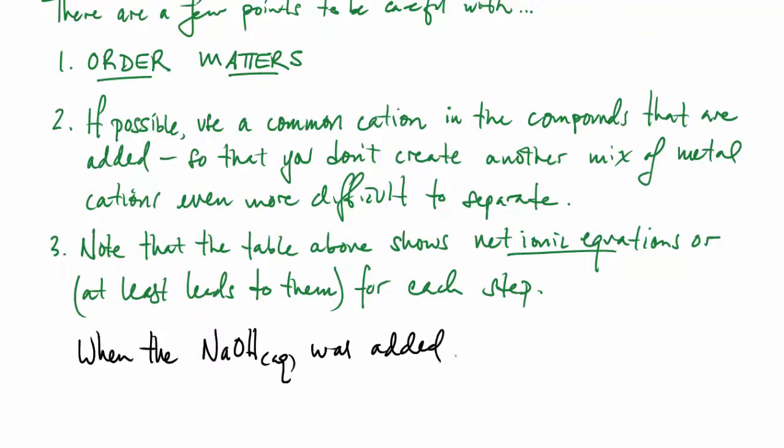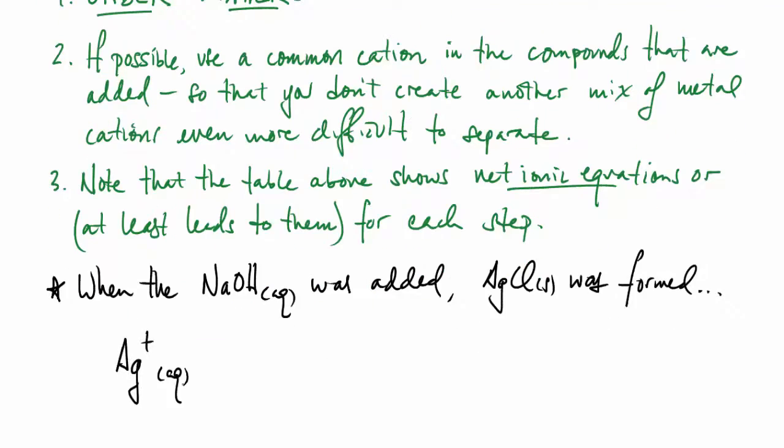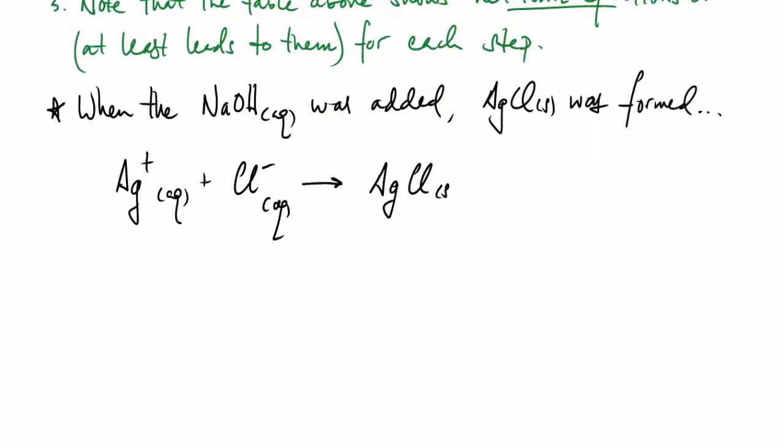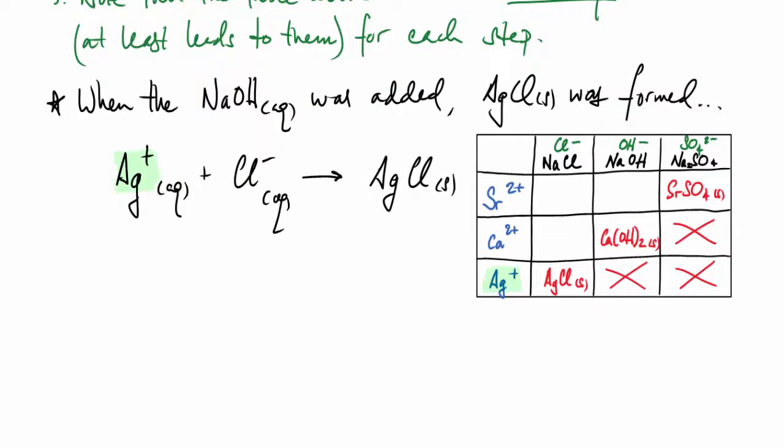Let's have a look at the first example. We added the sodium chloride and silver chloride was formed. There's the silver ion and the chloride ion giving you silver chloride. Notice in the table from above, there's the silver, the chloride, and the silver chloride—the elements of this net ionic equation are there in the table. You just read them off and write them down.